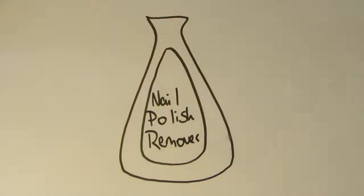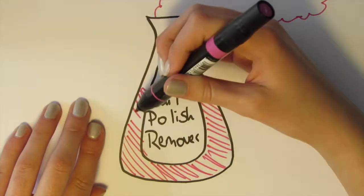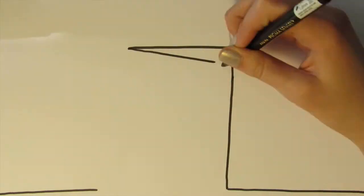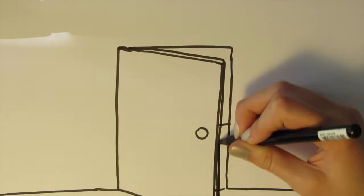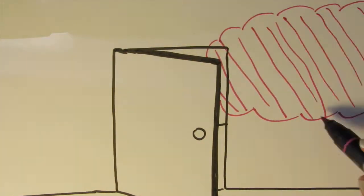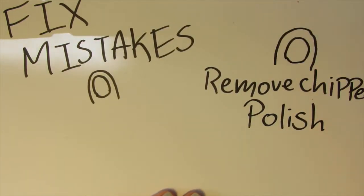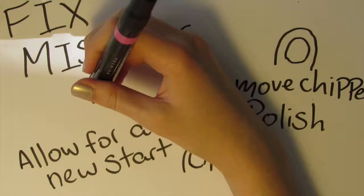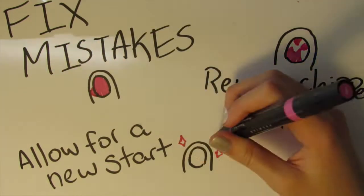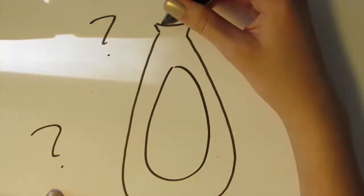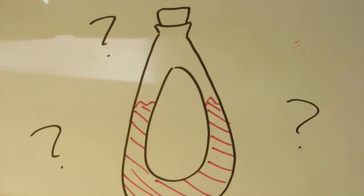Nail polish remover is probably regarded as one of the world's worst smells. Pungent and toxic, it's wafted out of many bathrooms and bedrooms. Like a magical solution, it's able to fix mistakes, remove chipped polish, or allow for a new start. But what's in nail polish remover that gives it this quality? And is it safe to use?